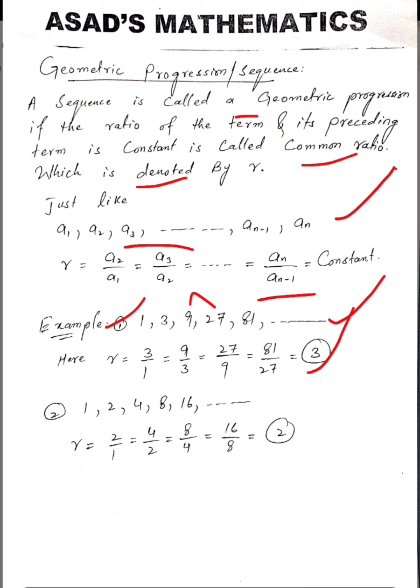The consecutive term ratios are 2/1, 4/2, 8/4, and 16/8. All the ratios are constant and the common ratio equals 2.